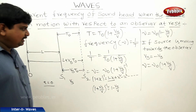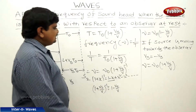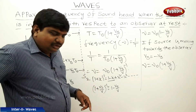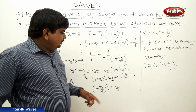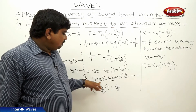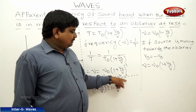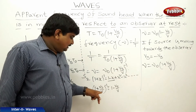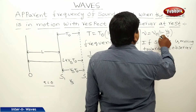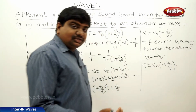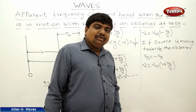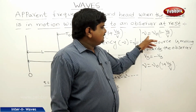To summarize: T = T0 × (1 + Vs/V), and frequency ν = 1/T, so ν = ν0 × (1 + Vs/V)^(-1). If the source is moving towards the observer, replace Vs with -Vs, giving ν = ν0 × (1 + Vs/V). The case with 1 - Vs/V represents a decrease in frequency, confirming the Doppler effect.